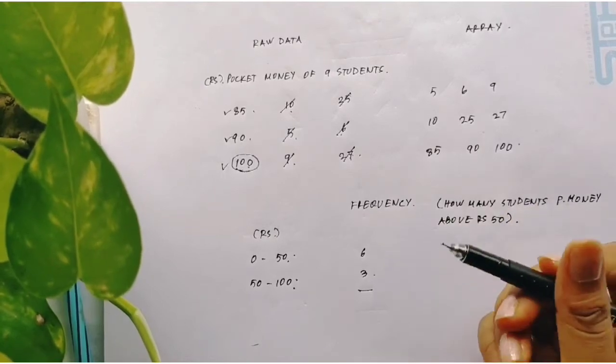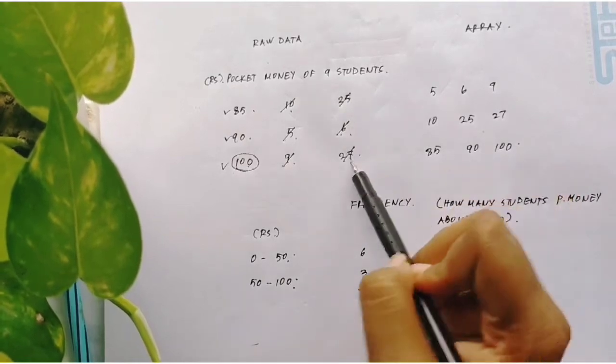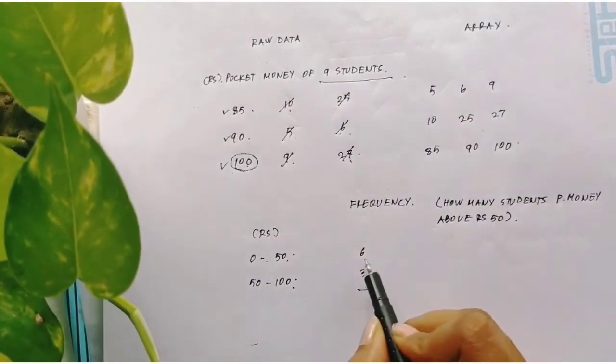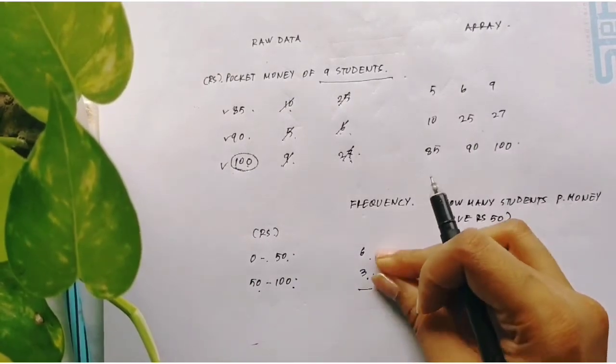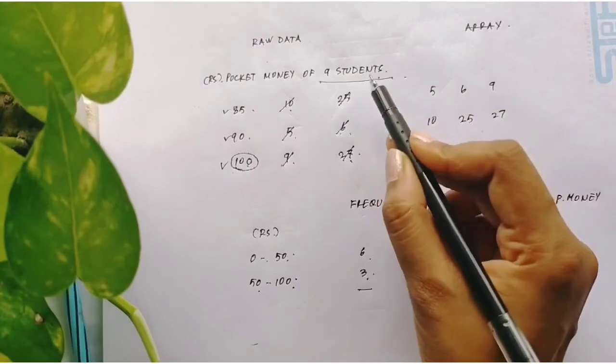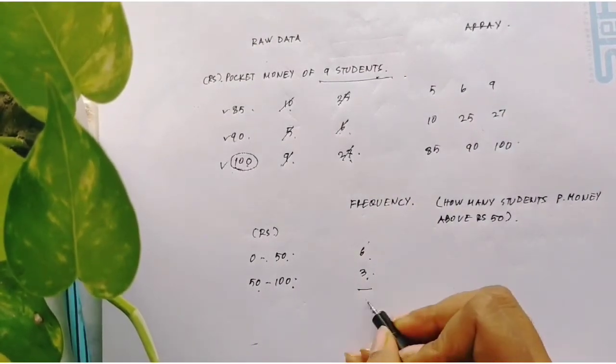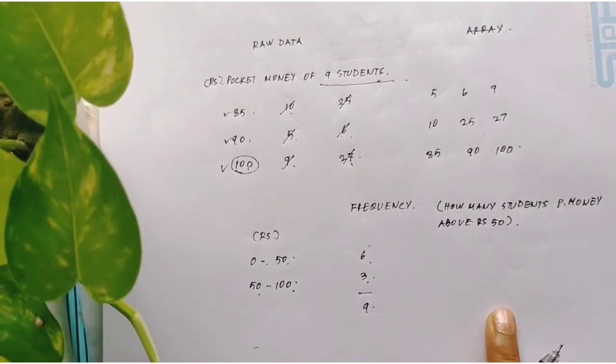Now technically, you see what your frequency is correct or not? You can cross check. How? Now the data here is 1, 2, 3, 4, 5, 6, 7, 8, 9 - 9 students. So if your frequency for the first group is 6 and second group is 3, they both should add to make 9 students because that is the total number of students. So 6 plus 3, they both add up to 9, so yes your frequency is correct.